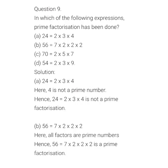First, let us revise what is prime factorization. When we are calculating the factors and if all the factors are only prime numbers, such a factorization is known as prime factorization. For the first one, 24 equals 2 multiplied by 3 multiplied by 4. Here 4 is not a prime number.